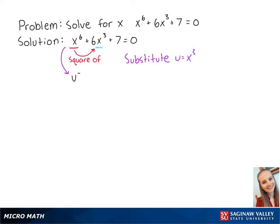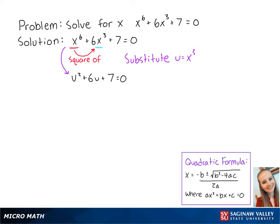So now we have u squared plus 6u plus 7 equals 0. The left side can't factor, so we're going to use the quadratic formula to solve for u. In this equation, a equals 1, b equals 6, and c equals 7.